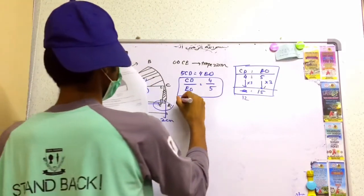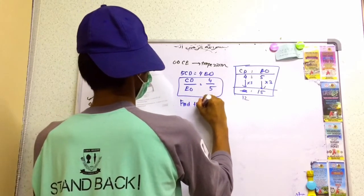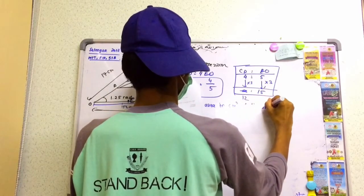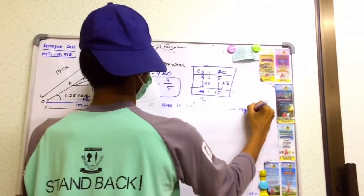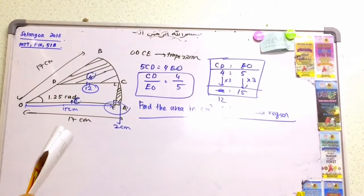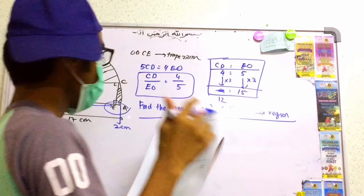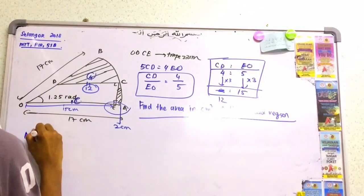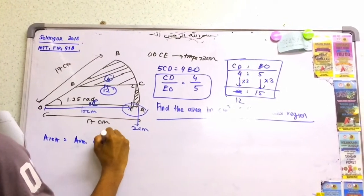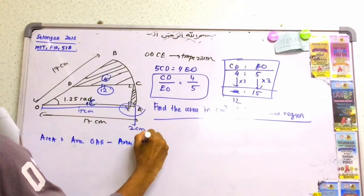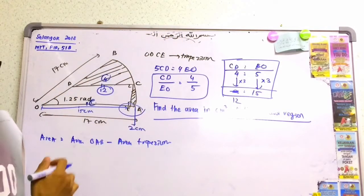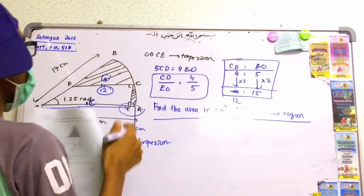The question asks: Find the area in cm² of the shaded region. The most important thing is the idea. So our idea is: Area of shaded region equals Area of sector OAB minus Area of trapezium. When we subtract the trapezium from the sector, we'll get the area of the shaded region.